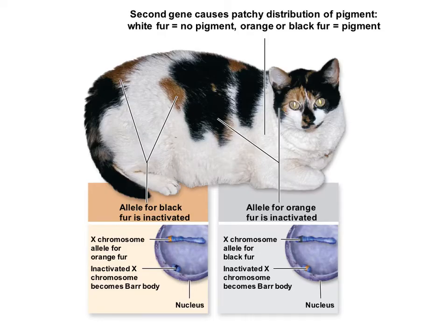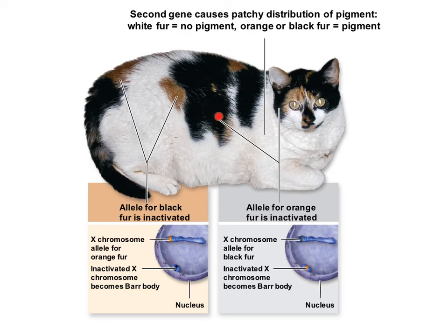Because of this X inactivation, we can see patterns like those in calico cats, which are all female. They have two X chromosomes and are heterozygous for fur color. Normally black color is dominant to brown, so a heterozygous female should only express black. However, since the X is randomly inactivated, in a patch of cells where the X that became inactive carries the dominant black allele, the brown recessive allele gets a chance to be expressed. The cells showing black patches are those where the X with the dominant allele is active and the one with the recessive has become a Barr body.